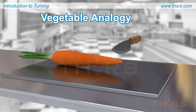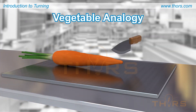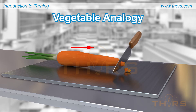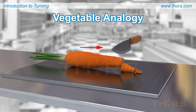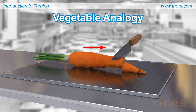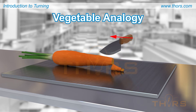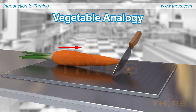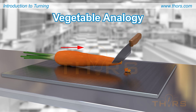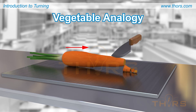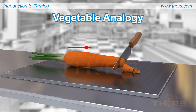What is referred to as the vegetable analogy is represented here. If the blade were to cut into a vegetable, either the blade or the vegetable itself must be moving. If the vegetable is fixed, the blade must be movable. If the blade is fixed, then the vegetable must be movable in order to engage the blade.